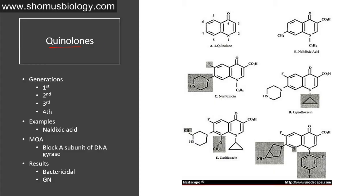There are four generations of quinolones. The first generation example is nalidixic acid. Its mode of action is to block the A subunit of DNA gyrase, rendering the ligase activity of gyrase inactive. As a result, DNA gyrase acts only as an endonuclease and destroys the DNA, resulting in bactericidal activity — meaning bacterial death.